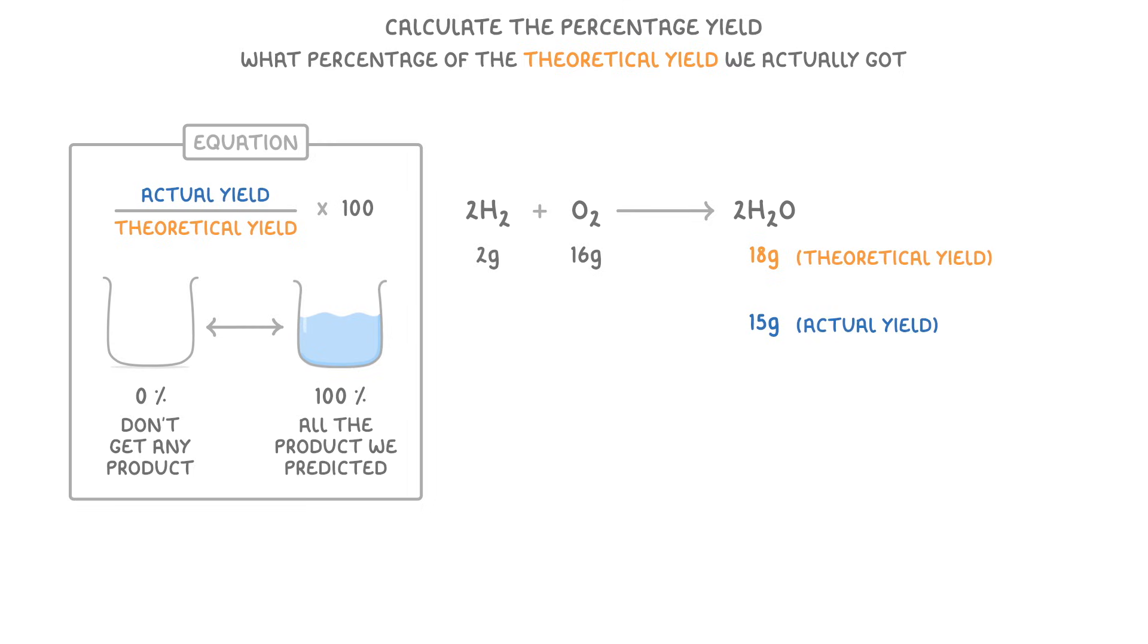So to find the percentage yield, we do 15 divided by 18 and then times it by 100, which would give us 83.3%, or in other words, we got 83.3% of what we expected.